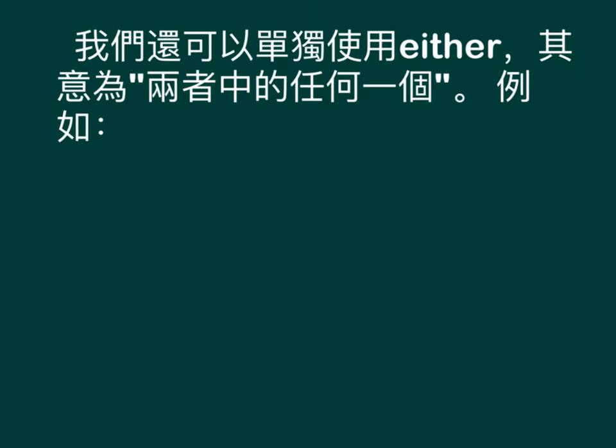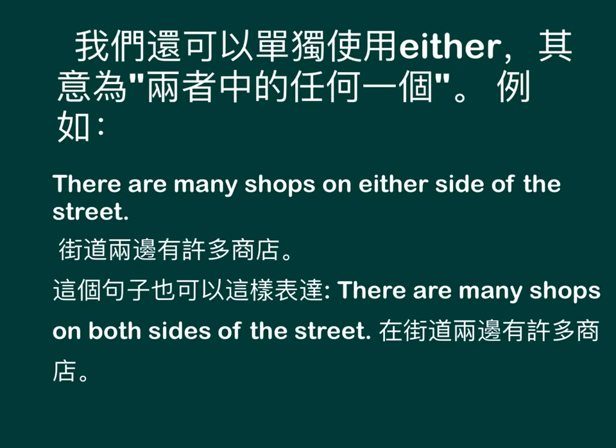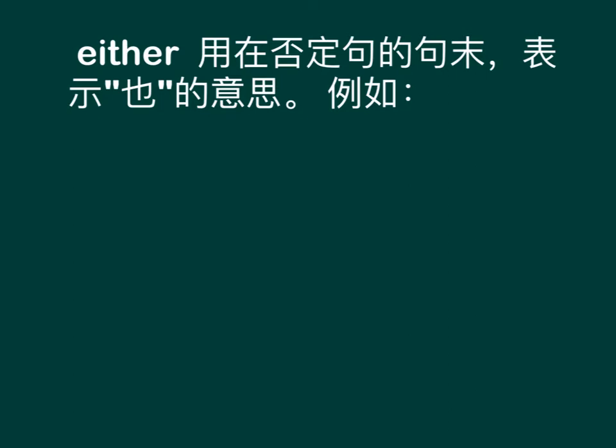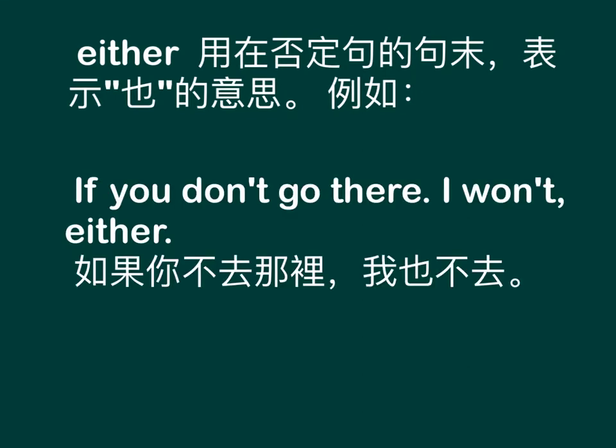We can also use 'either' alone, meaning 'any one of the two'. For example: There are many shops on either side of the street — 街道两边有许多商店. This can also be expressed as: There are many shops on both sides of the street. Additionally, 'either' used at the end of a negative sentence means 'also'. For example: If you don't go there, I won't either — 如果你不去，我也不去.